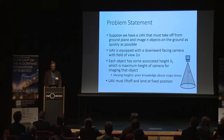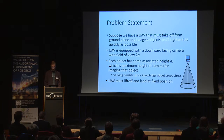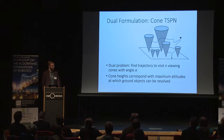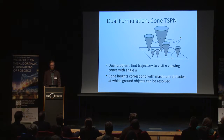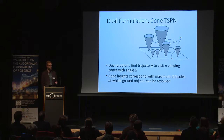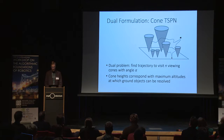We require that the UAV must lift off and land at a fixed position, which is practical. We can formulate this as the dual problem: find a trajectory to visit N viewing cones. These cones have the property that when the UAV is in the cone, the camera will be able to see the point which is the apex of the cone, while satisfying the height constraint. The cone heights correspond with the maximum altitudes at which the ground objects can be resolved.